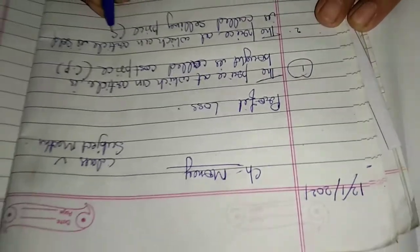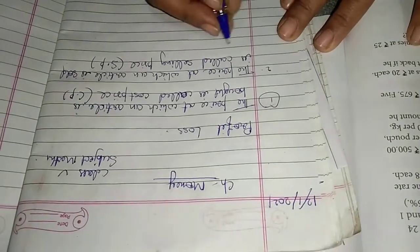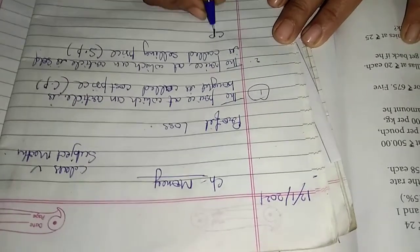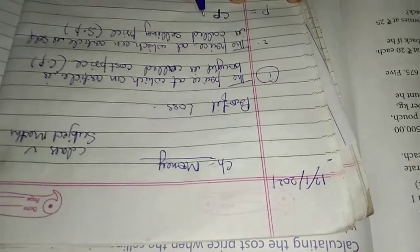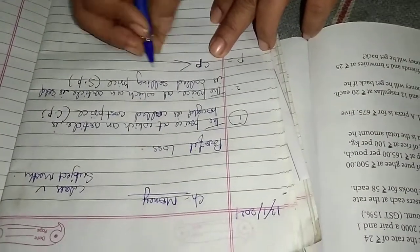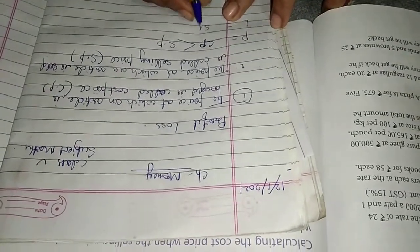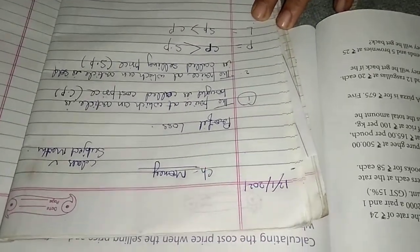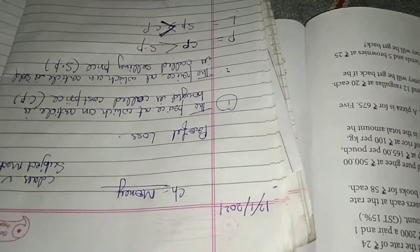Okay, what is profit? Profit is when CP is smaller than SP. That means profit when SP is greater than CP.